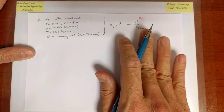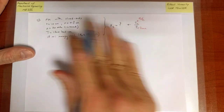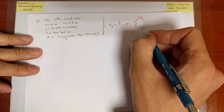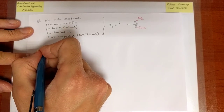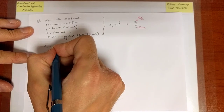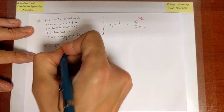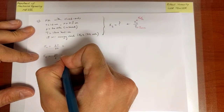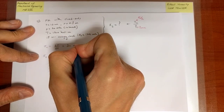Now I go ahead and find those values. I start by determining the actual state of loading. The axial stress is PR over 2t and the tangential stress is PR over t. We have solved this example before. The tangential stress is 600 MPa and the axial stress is 300 MPa.